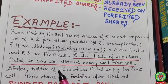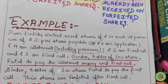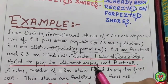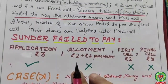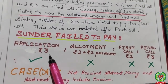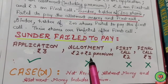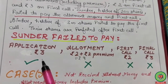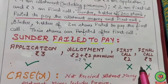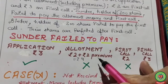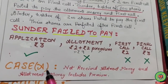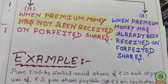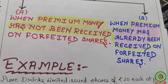Sundar, holder of 100 shares, failed to pay the allotment money and first call. So here: application rupees 3 paid, allotment rupees 2 plus premium rupees 2 equals rupees 4 not paid, first call rupees 2 not paid, final call rupees 3 not paid. Since Sundar did not pay the allotment, it also means premium was not paid — this comes under Case A: premium money has not been received on forfeited shares.